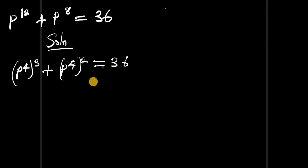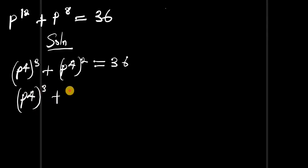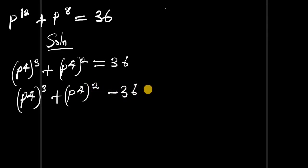The next step is to rearrange this, so we have (p to the power of 4) to the power of 3 plus (p to the power of 4) to the power of 2 minus 36 equals zero. Now we can split down this 36.